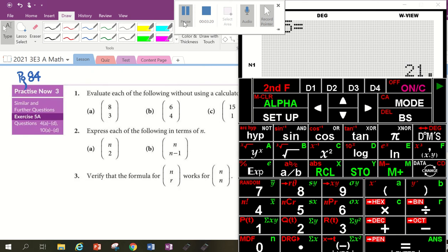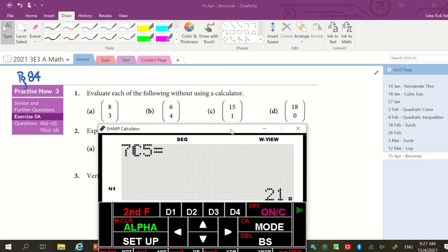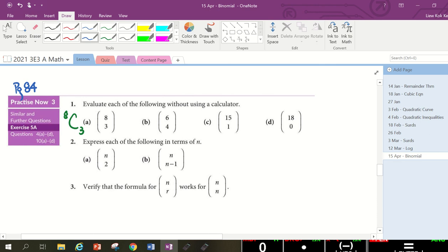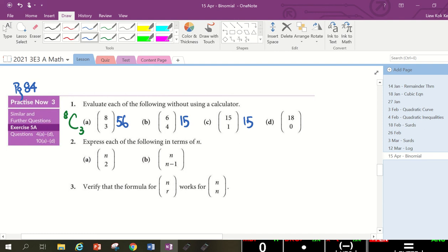Now, on page 84 for Practice Now 3, please show me how you're going to use the calculator for 1A to 1D. Press and show me the answer in the textbook. I'll go through with you in a short while. Deepak, can you give me the answer for 1A? 56. 6. Brian? 15. Weehang? 15. 7. 1.